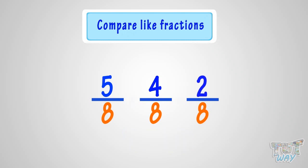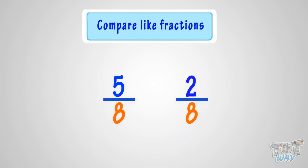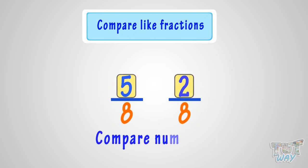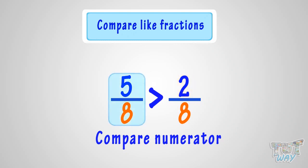For example, comparing 2 by 8 and 5 by 8 — you just need to compare the numerators. The fraction with the bigger numerator is the bigger fraction. So here, 5 by 8 is greater than 2 by 8.